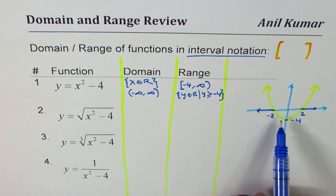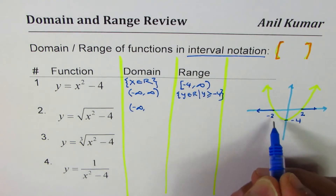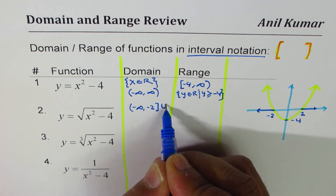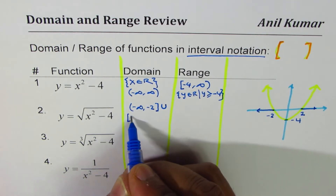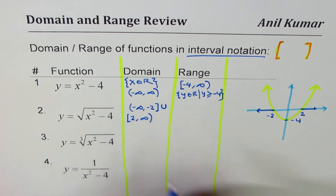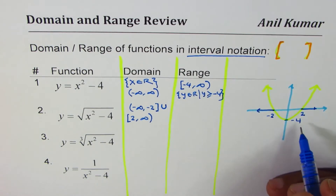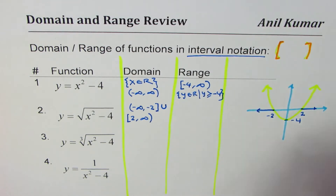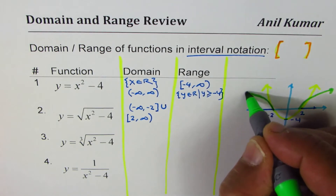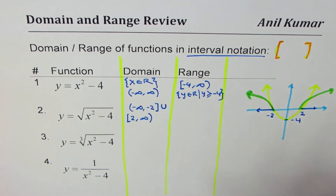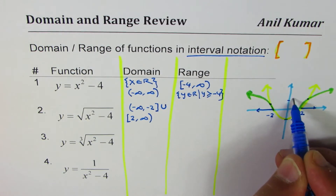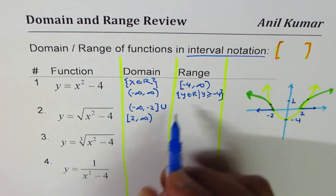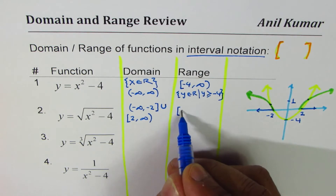The domain of √(x² - 4) is from -∞ to -2 (with -2 included) union 2 to ∞. You can never include infinity, so the domain is (-∞, -2] ∪ [2, +∞). For any value of x in this domain, the square root is always non-negative. So the range is [0, +∞).